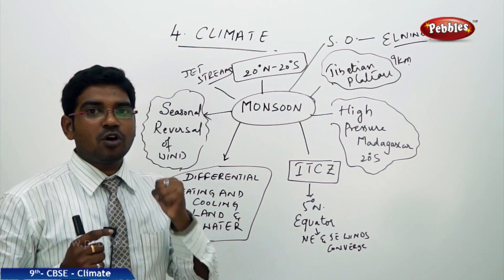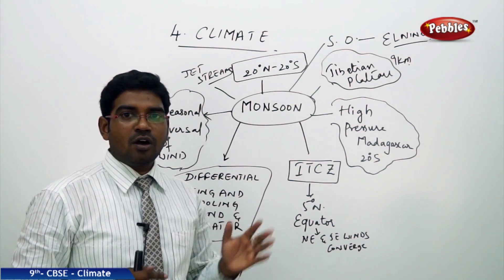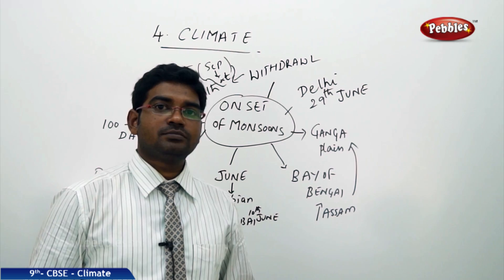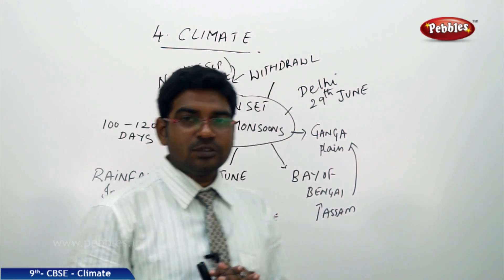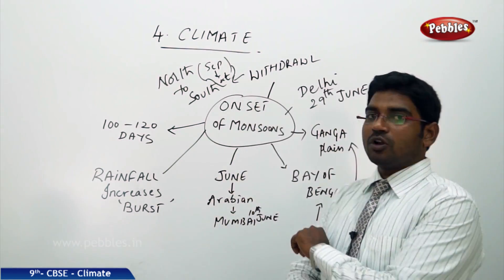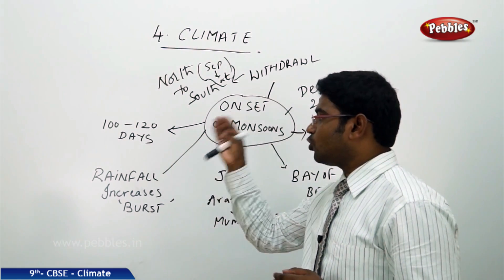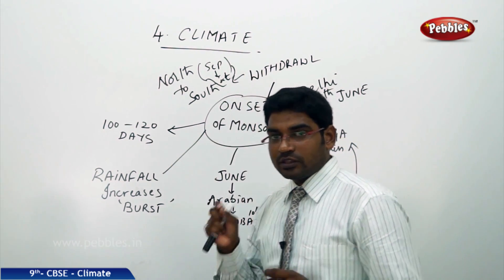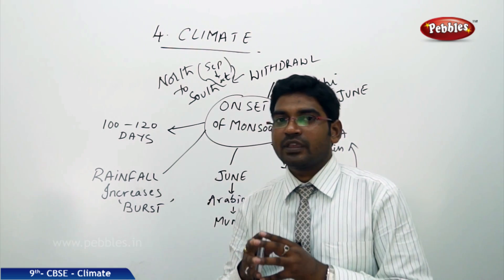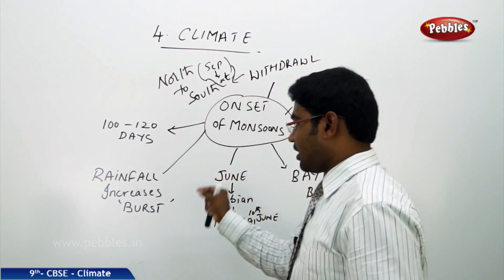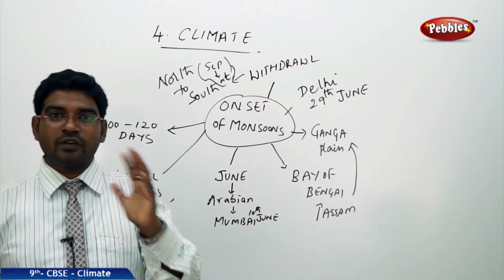Now let us see how the monsoons onset in India — which month they arrive and when they leave. The monsoon generally spreads over 100 to 120 days. Normal rainfall suddenly increases, and this sudden increase is known as the 'burst' of the monsoon. This burst is the signal that monsoons have arrived on the Indian land.